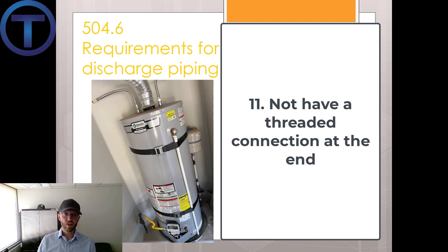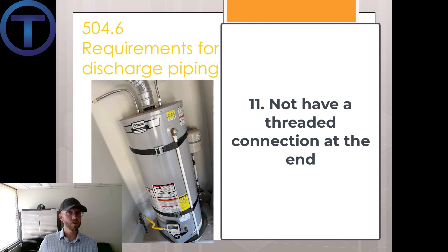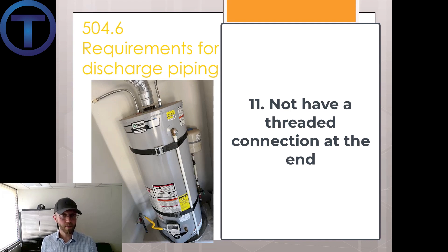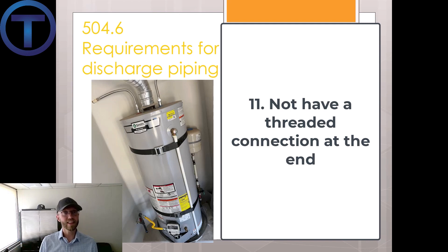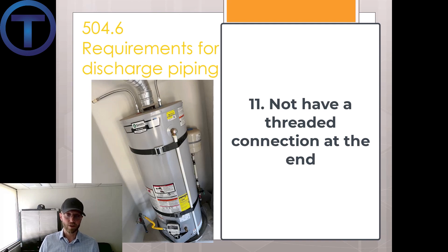Number eleven: shall not have a threaded connection on the end of such piping. They used to make these discharge pipes out of galvanized pipe — just grab a scrap, thread it, and throw it on there. If there are threads on the bottom and someone notices it's leaking, they might put a cap on there. That significantly increases the danger because now there's no place to relieve the excess pressure.